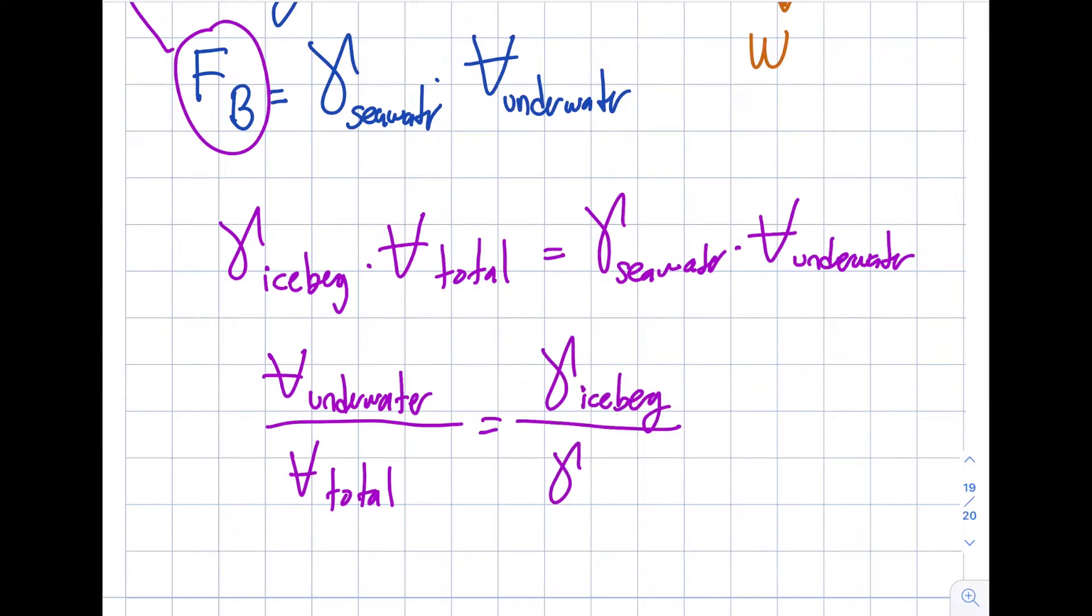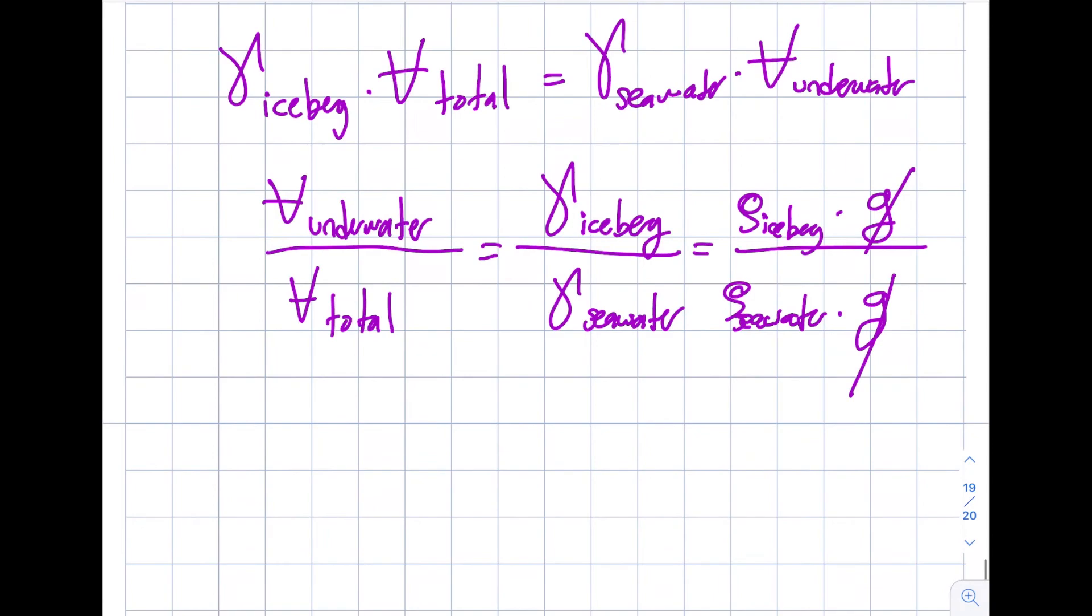And if you see in here, that will be the specific weight of the iceberg divided by the specific weight of the seawater. So this will be the density of the iceberg times gravity divided by density of seawater times gravity. Acceleration due to gravity cancels out.